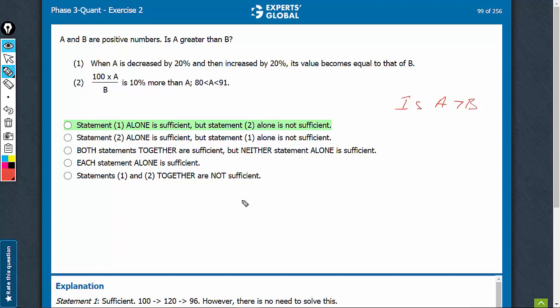Statement 1 says that A, when decreased by 20%, becomes 0.8A, and then increased by 20%, 0.8 into 1.2, 0.96A. Now, it becomes equal to B. A became 0.96A, therefore, it was reduced, and now it became equal to B.